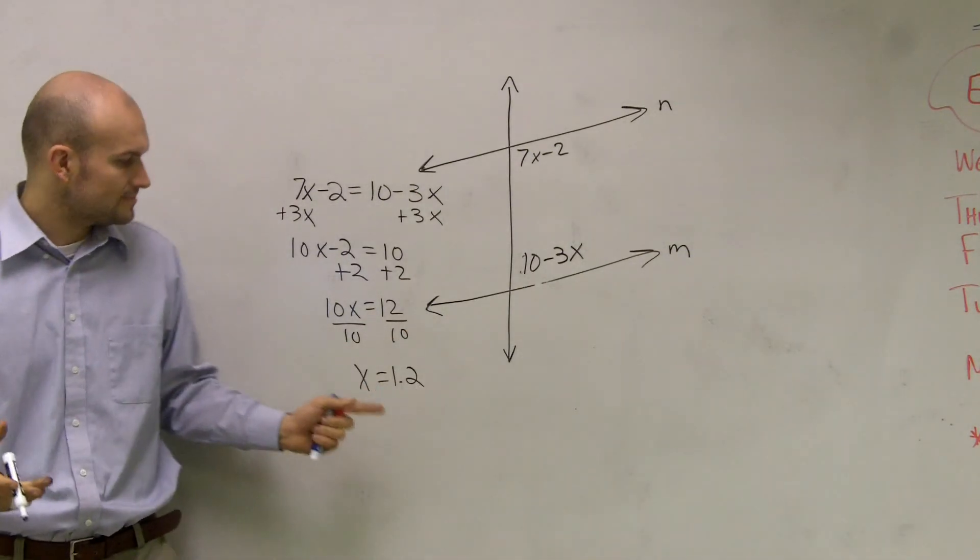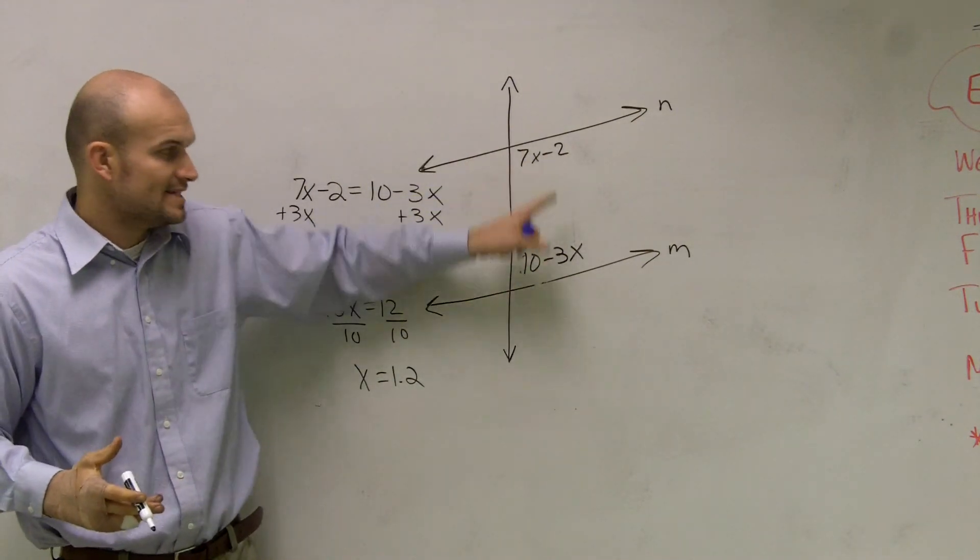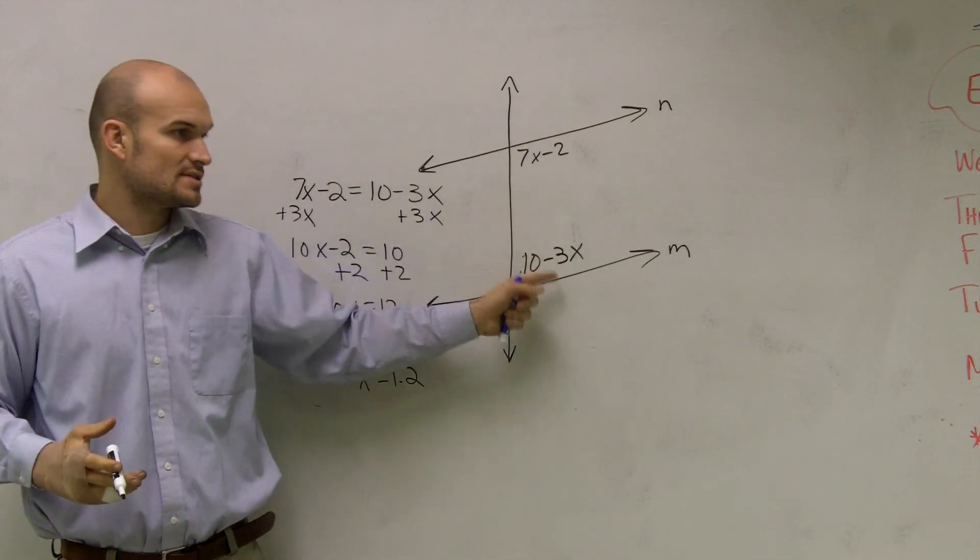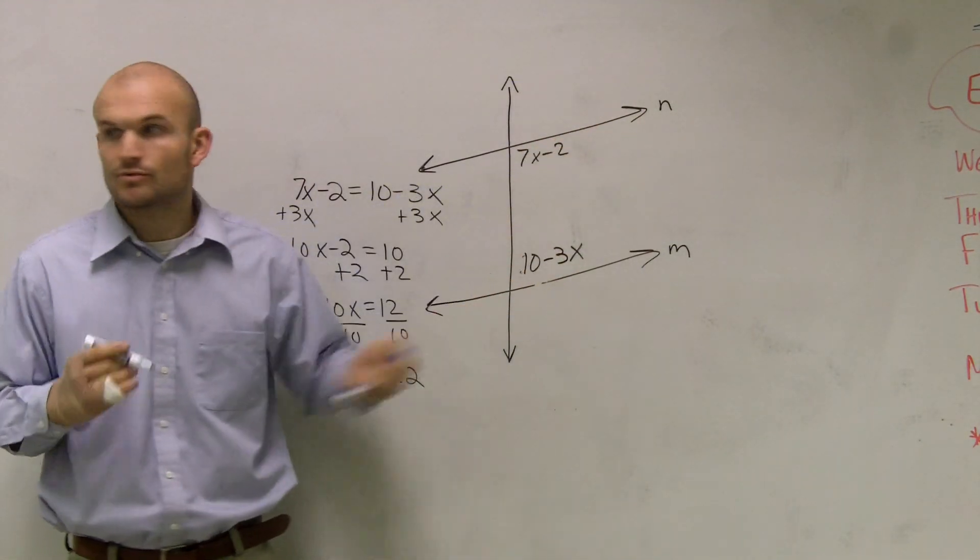So what that states is whenever my x value is equal to 1.2, these two angles equal each other. And since these two angles equal each other, when x is equal to 1.2, my two lines will be parallel.